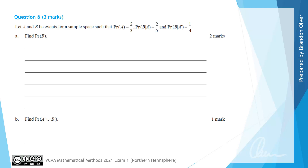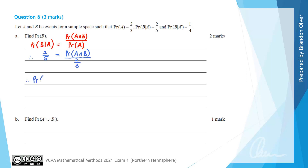For a question like this, where we have conditional probabilities included, it's useful to write down the formula: the probability of B given A is equal to the probability of A intersecting B divided by the probability of A. So the probability of B given A, which we know is 2/5, equals the probability of A intersecting B divided by 2/3. Therefore, the probability of A intersecting B equals 2/5 times 2/3, which gives 4/15.